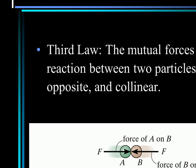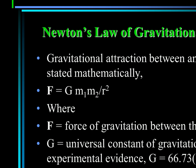The third law is Newton's third law: the mutual forces of action and reaction between two particles are equal, opposite, and collinear. Newton's law of gravitational attraction between any two particles states mathematically: F equals G times M1 times M2 over R squared. F is the force of gravitational attraction between the two particles. G is the universal constant of gravitation; according to experimental evidence, G is equal to 66.73 times 10 to the minus 12. The unit is m³ over kg times second squared.